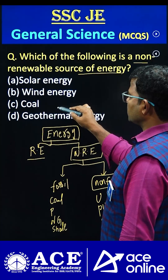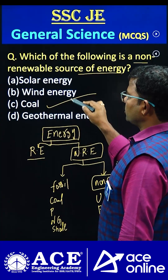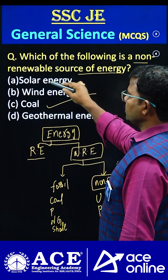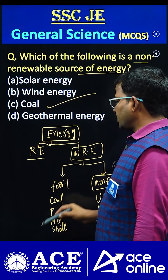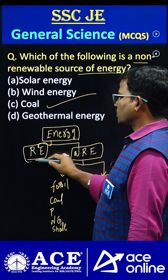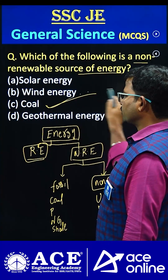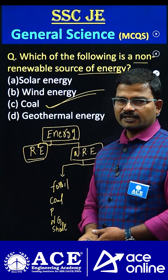So finally, the correct answer is option C only. The remaining things are considered under the category of renewable energy sources only. So that's why the correct one is option C.